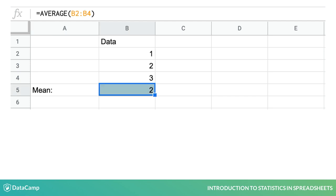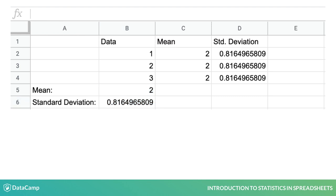First, we need to calculate the mean using the average function, and then the standard deviation using STDEVP. Let's add this information into two new columns. To calculate the z-score, we then need to subtract the mean from each data point and divide by the standard deviation.